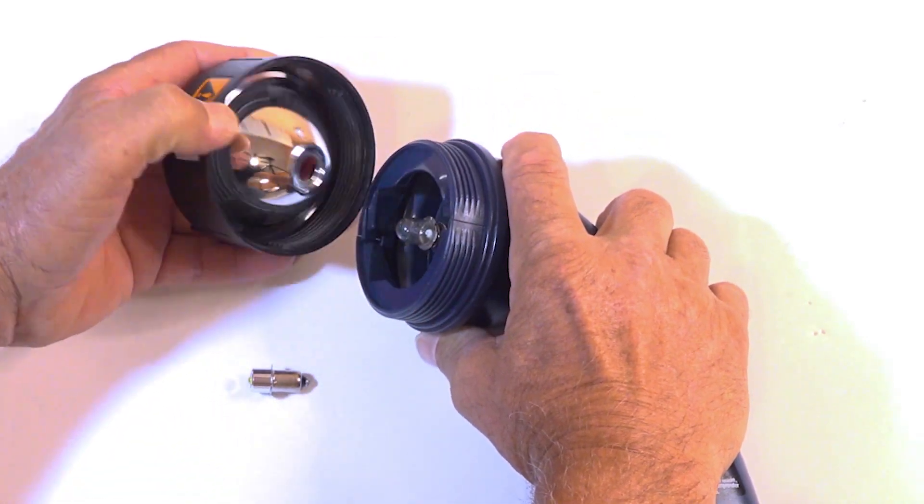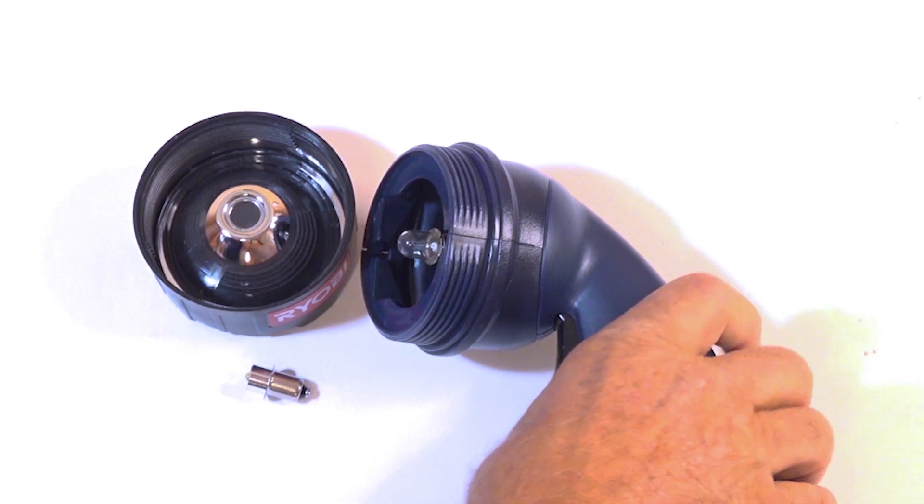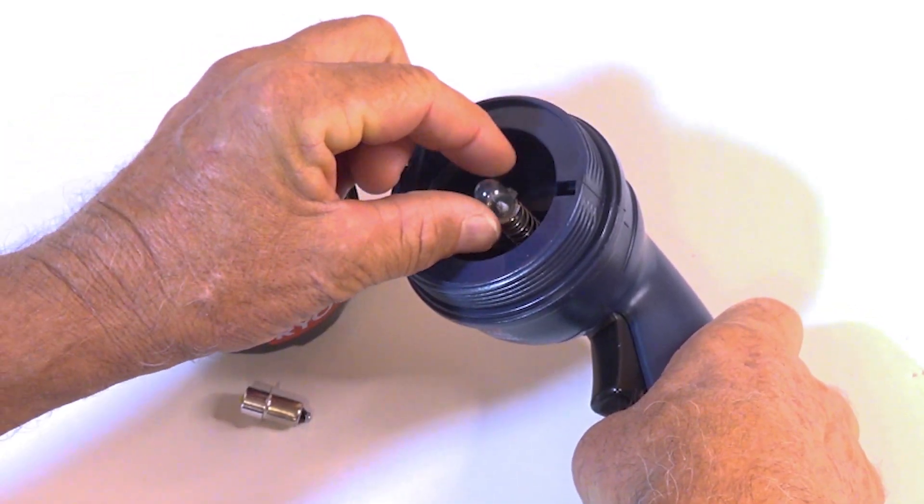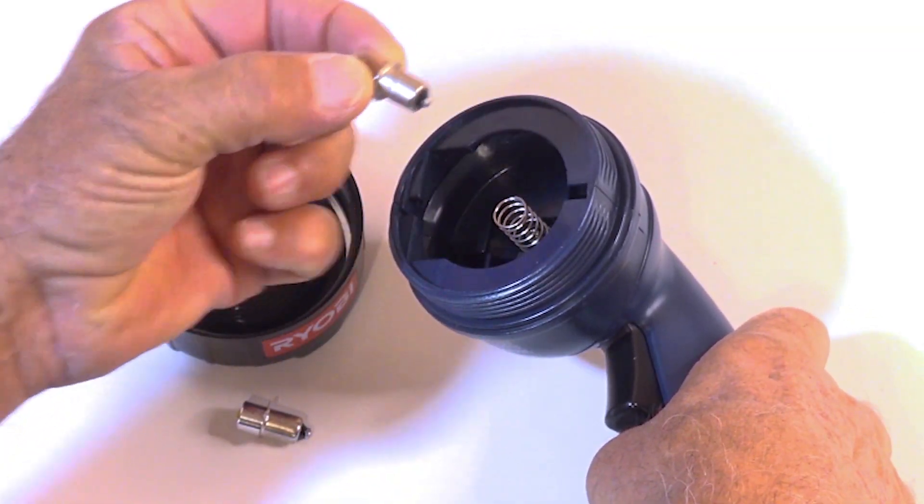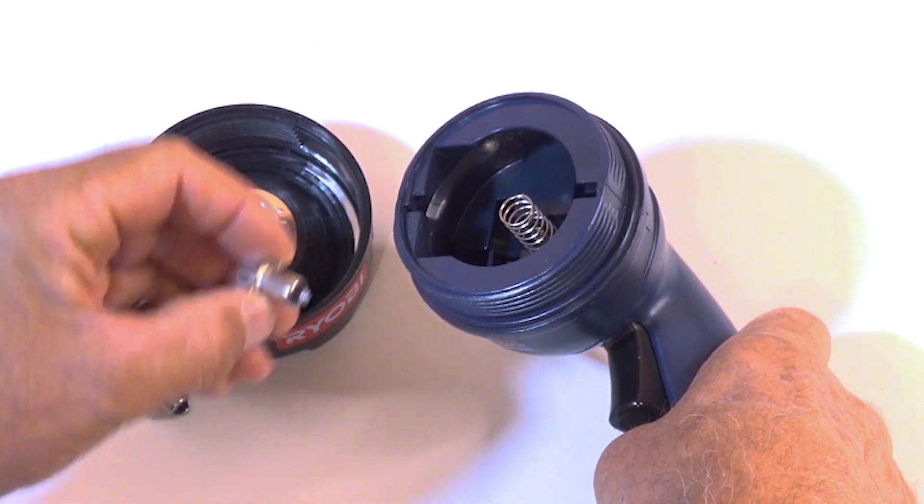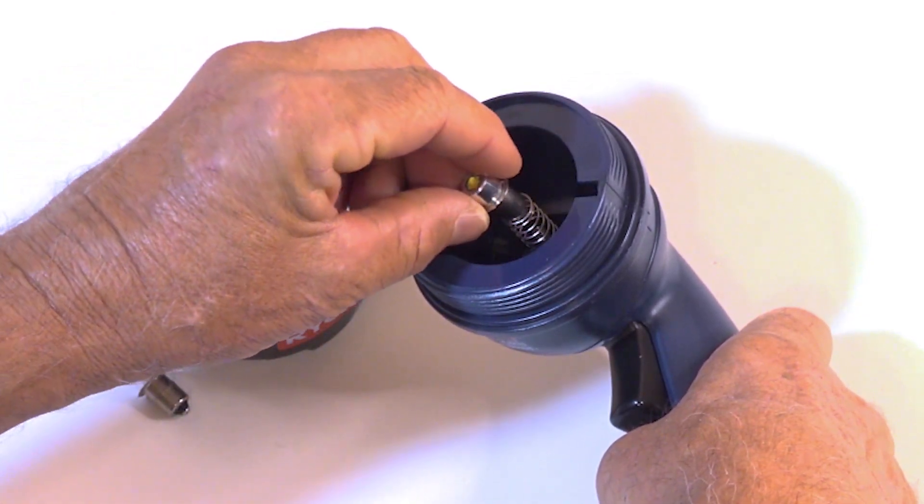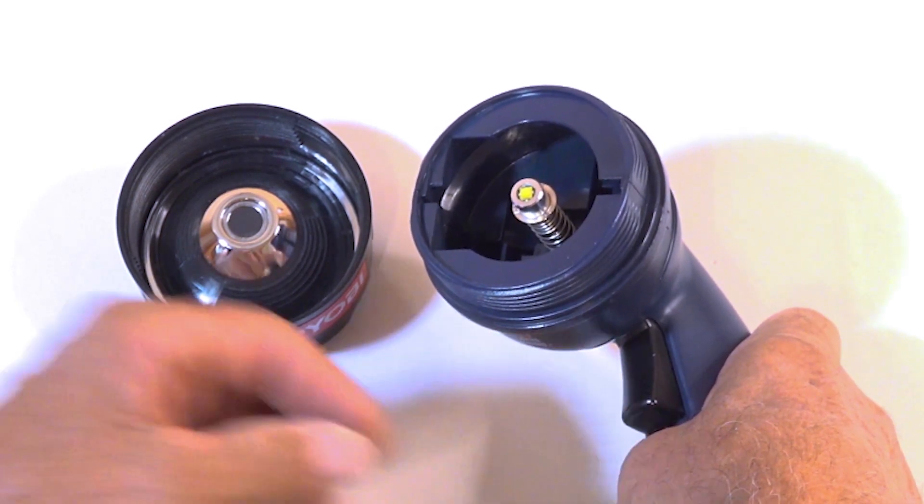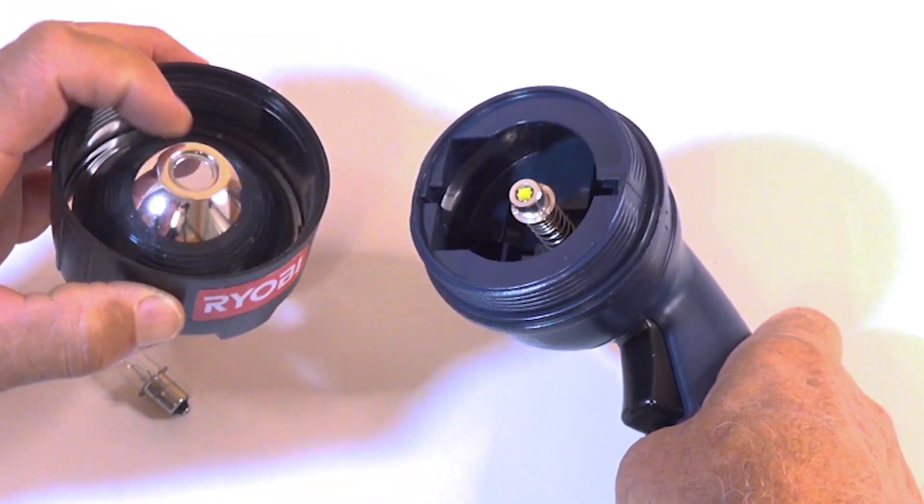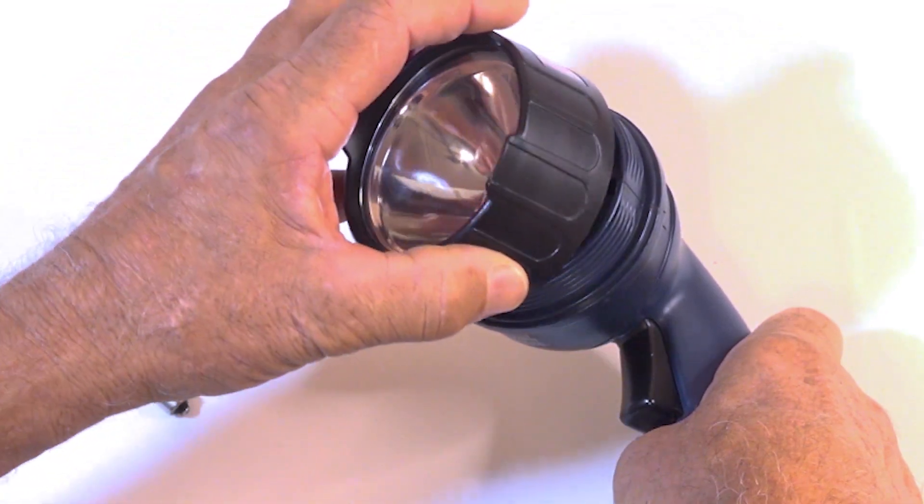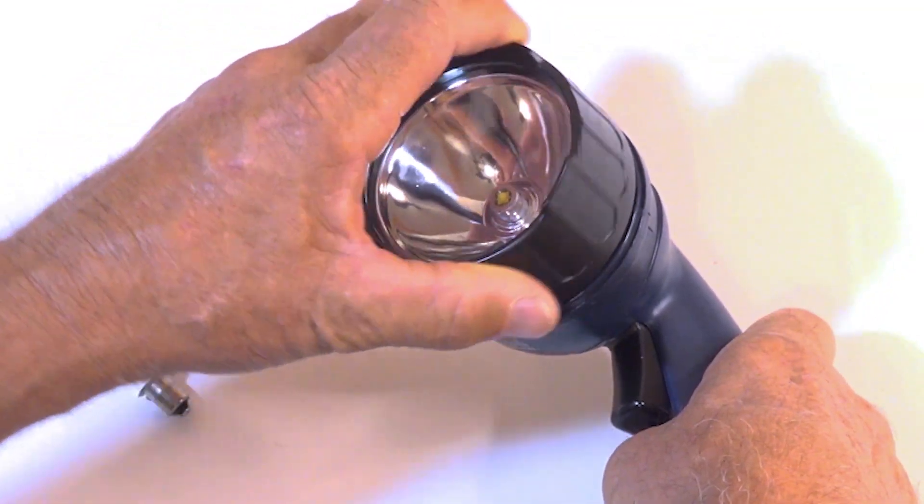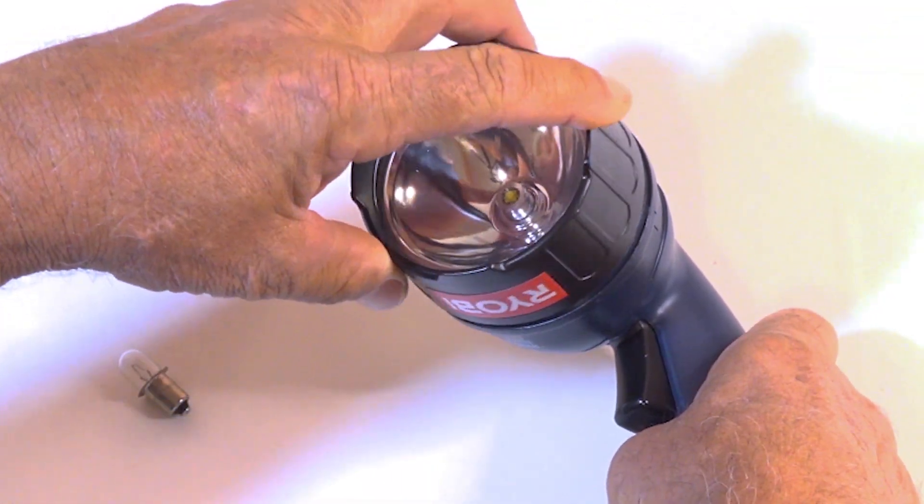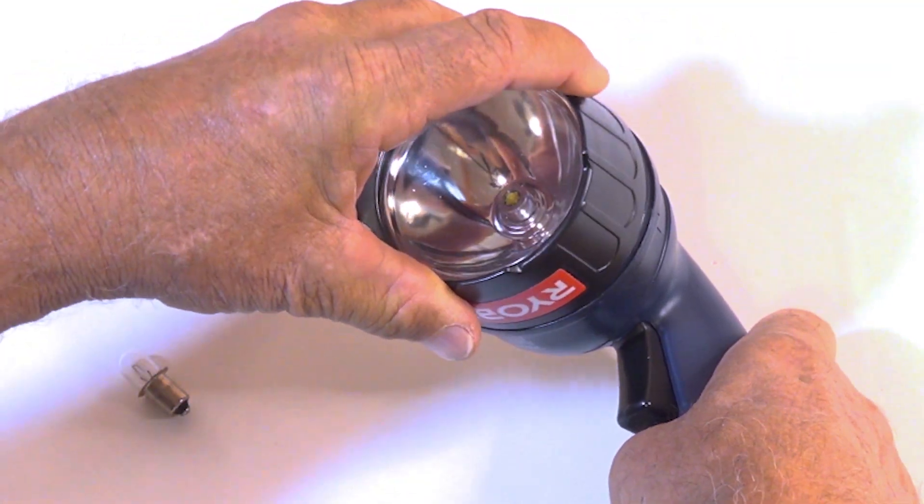All you do is you just unscrew this, then this literally just pulls straight up. This one here just pushing straight in. At this point the light won't work. It's not until you get this on that the light will actually work. This is the hardest part right here, getting this to screw on.